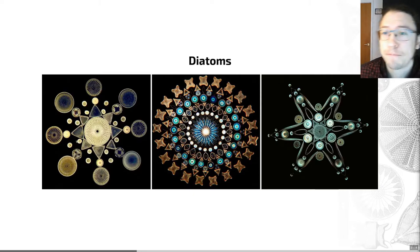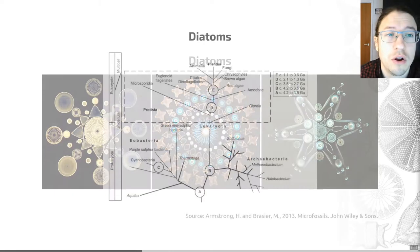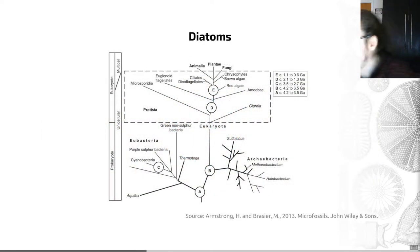Indeed, the Victorians in the 19th century UK loved to arrange diatoms into nice, pretty patterns, such as the ones you can see on this slide. All of this was done with a light microscope.